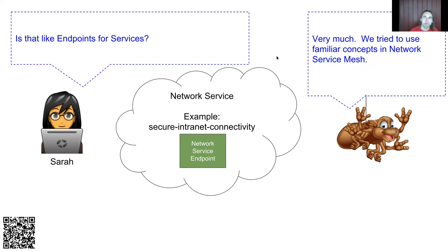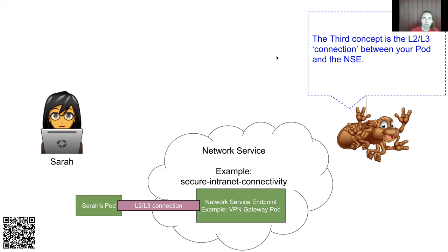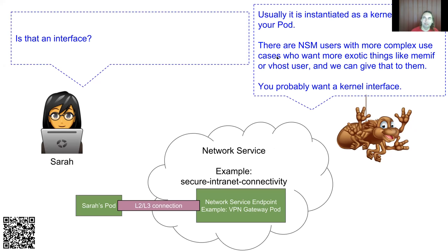The Network Service Endpoint is exactly like endpoints for services. We got advice from SIG Networking to, for the love of God, not make it plural — that was a very bad idea — so we have not made it plural. An example is the VPN gateway pod. The third concept is the L2/L3 connection between your pod and the Network Service Endpoint. It can be instantiated as a kernel interface for most application pods, though there's flexibility for NFE use cases that want MIF or Vhost user. Your run-of-the-mill app developer will probably just get a kernel interface.